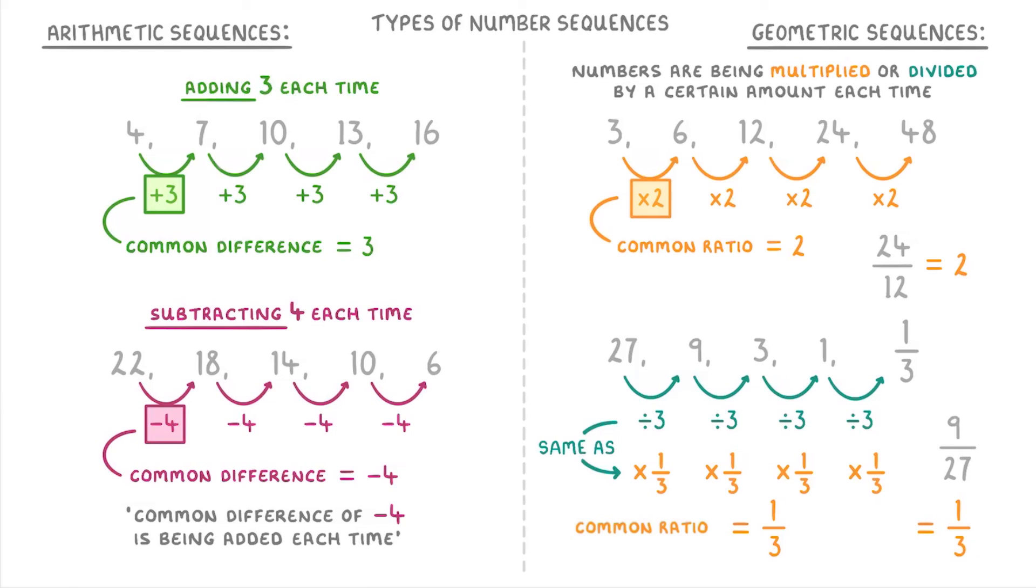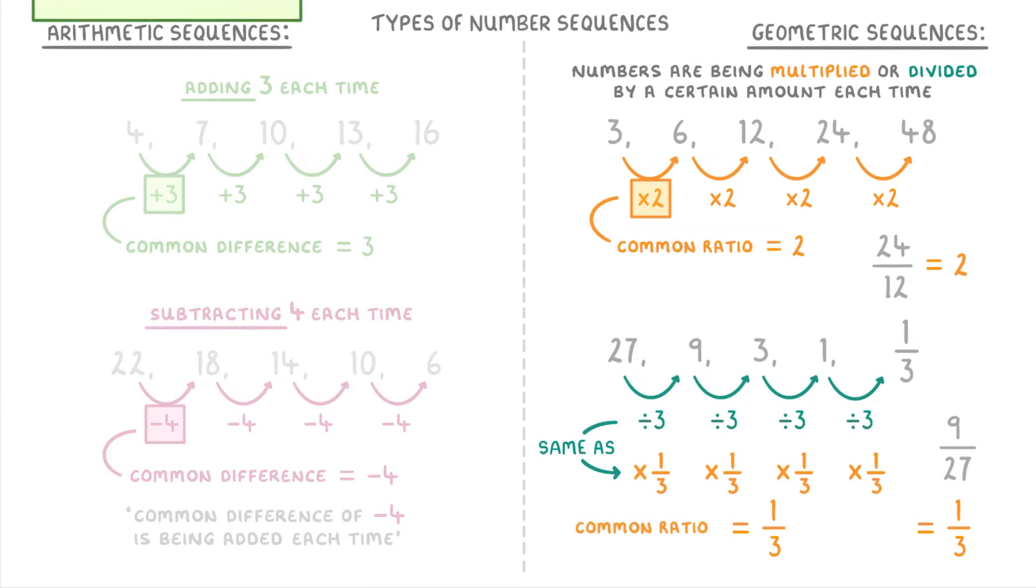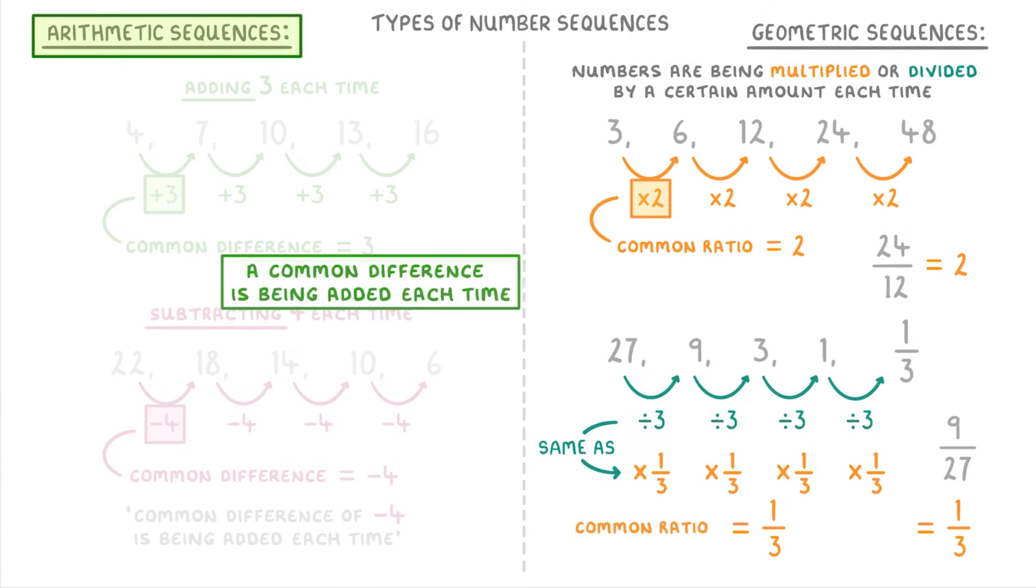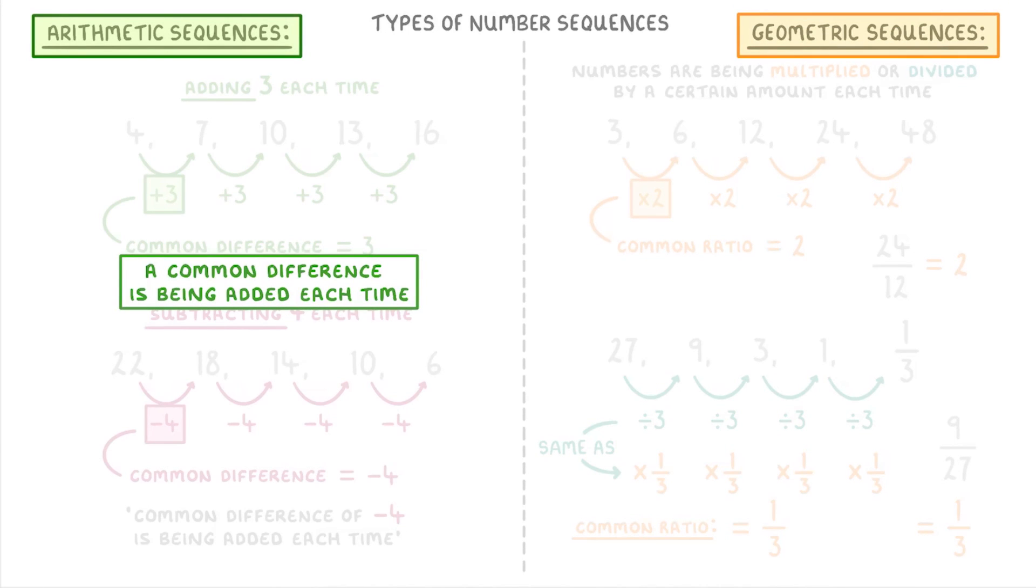To quickly sum up this video, there are two main types of sequences: arithmetic sequences where a common difference is being added each time, and geometric sequences where the terms are being multiplied by a common ratio each time.